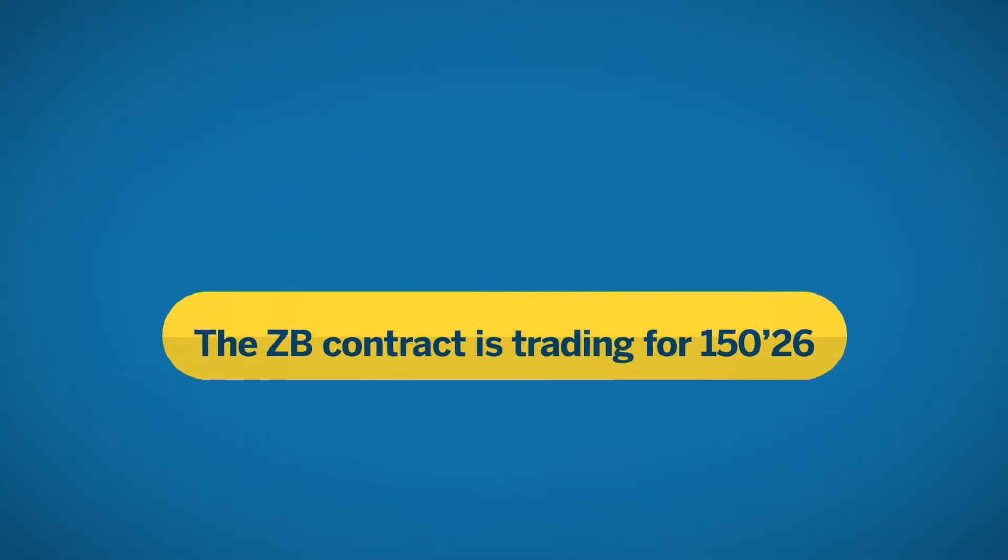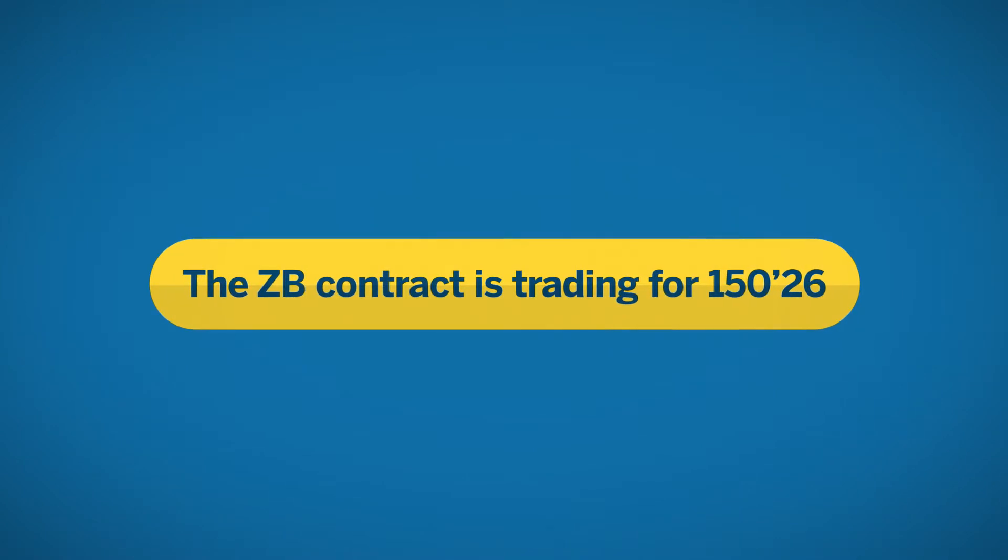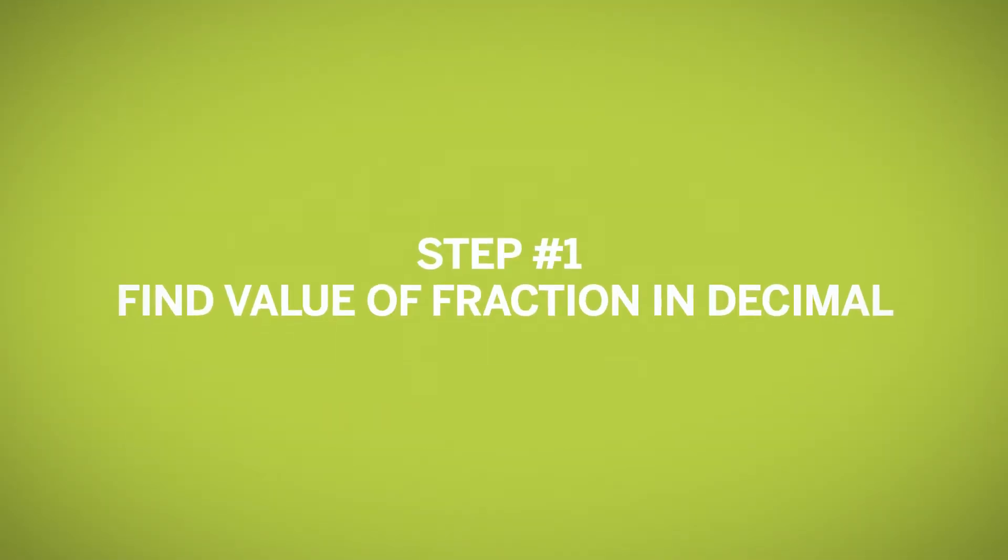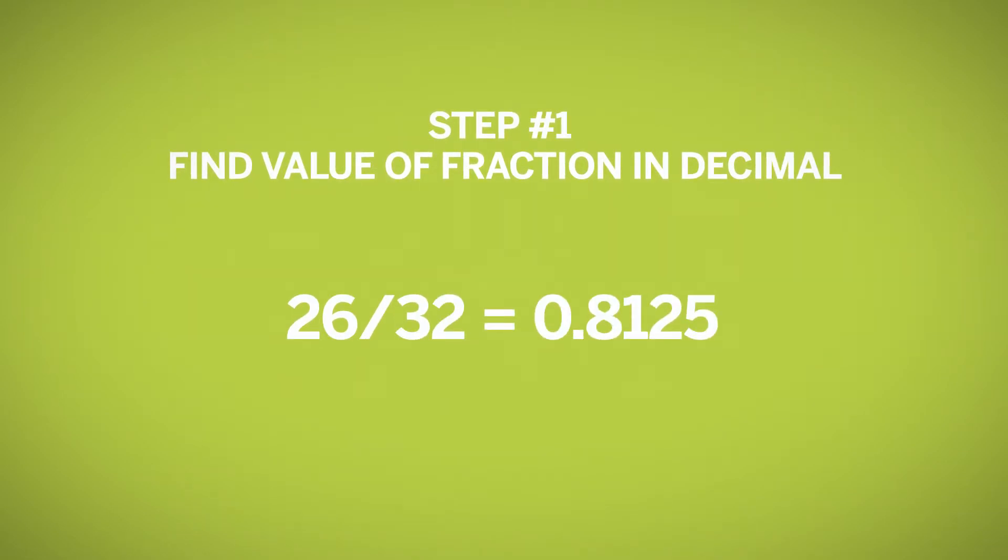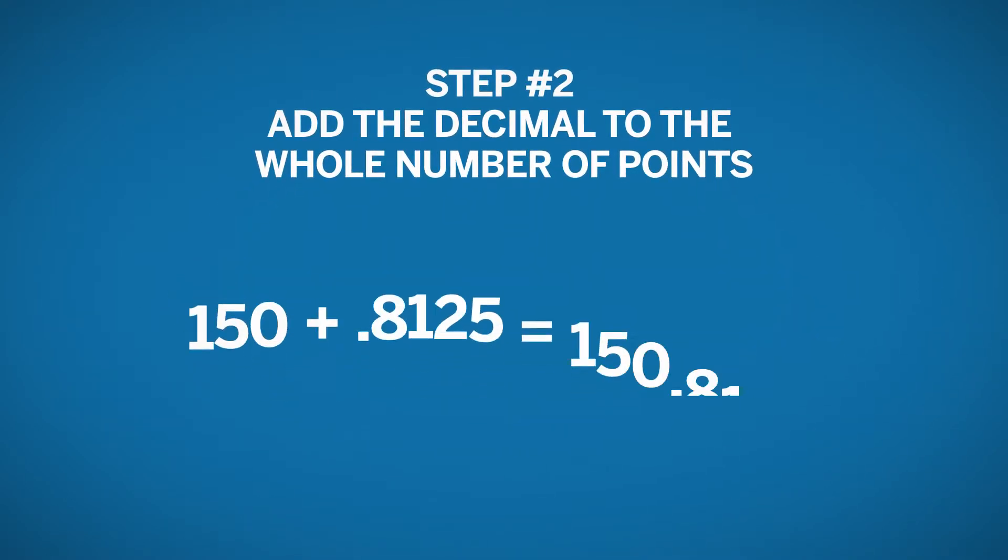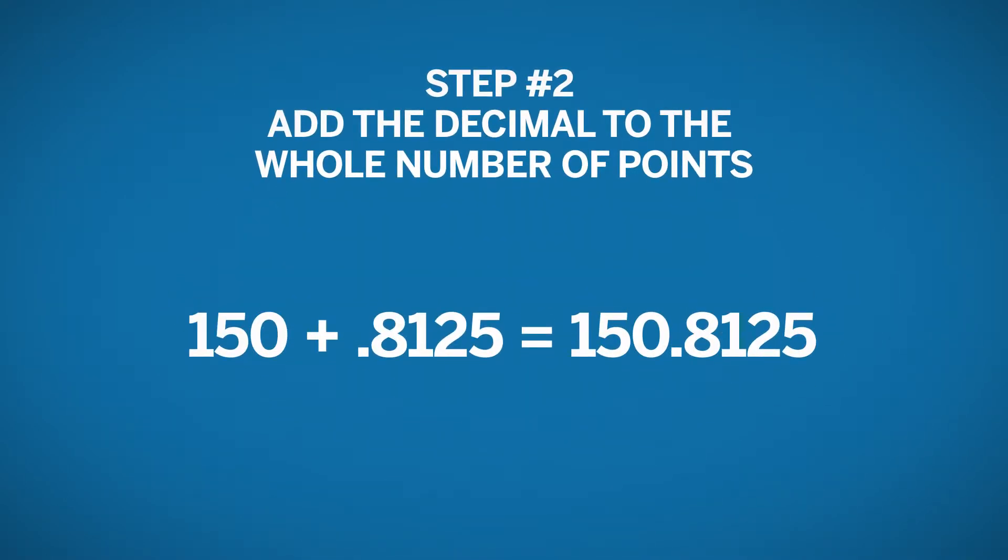Here is a trading example. Let's say the ZB contract is trading for 150-26/32. The calculation to determine the decimal value of the fraction is 26 divided by 32, which equals 0.8125. Next, add the decimal amount to the whole number of points: 150 plus 0.8125. Now we have a quoted price in decimal, which is 150.8125.